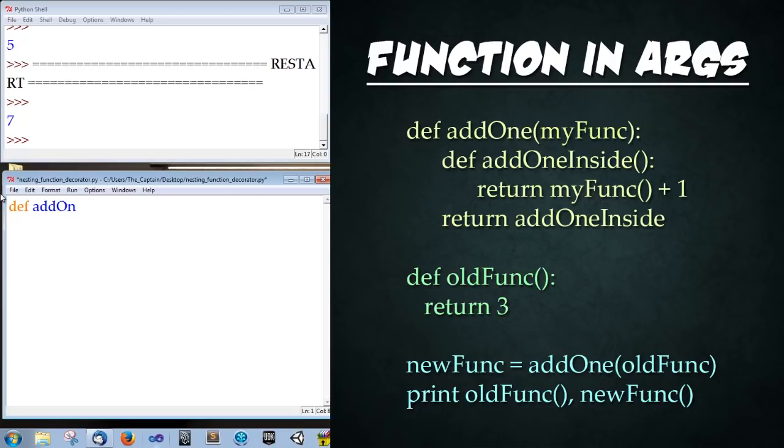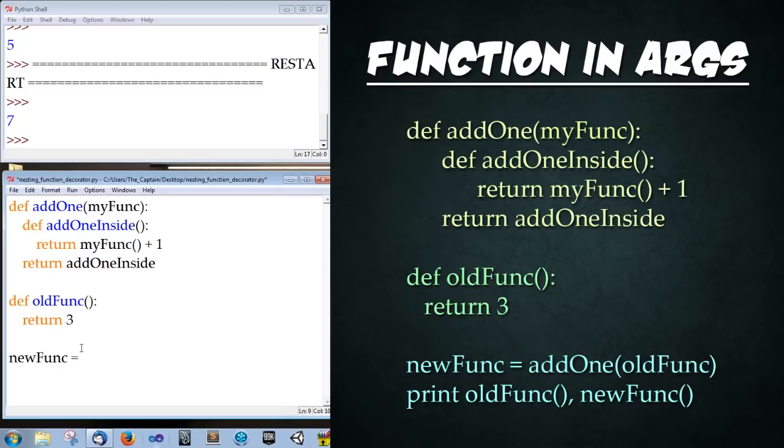So we're going to type def add1 open parenthesis myfunk close parenthesis colon enter def add1 inside open close parenthesis colon enter return myfunk open close parenthesis plus one enter. And then I'm going to type return add1 inside enter, and then we're going to declare a simple function that just returns 3. So type def old funk open close parenthesis colon enter return three. After that type new func is equal to add one open parenthesis old func close parenthesis enter print old func open close parenthesis comma new func open close parenthesis. Save it. Let's go ahead and run it. Beautiful.